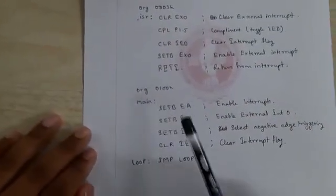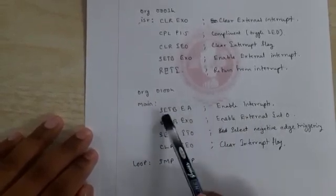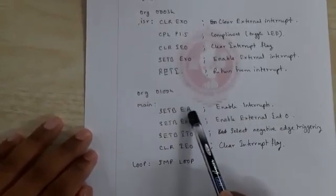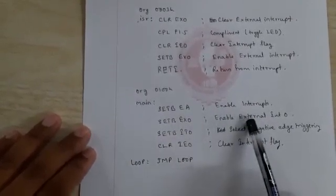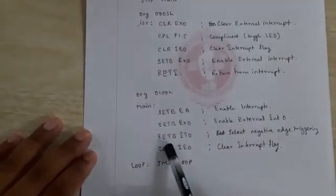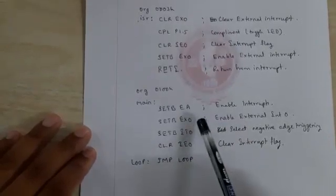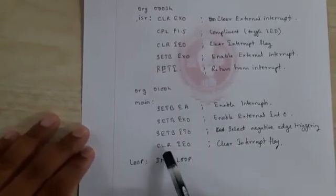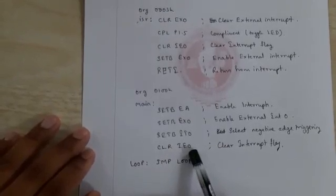Here we first enable the interrupts: SETB EA enables all interrupts, SETB EX0 enables external interrupt 0, and SETB IT0 selects the negative edge triggering for interrupt 0. We clear the interrupt flag initially.